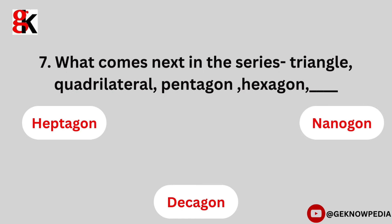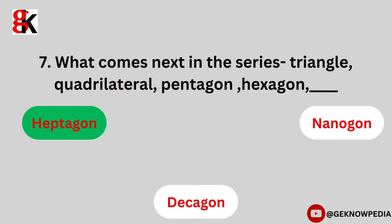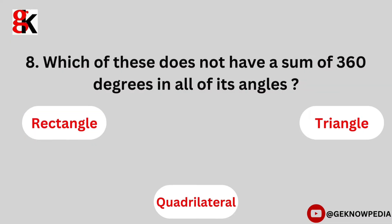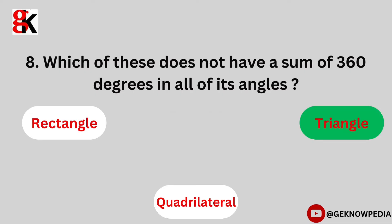The correct answer is square. The correct answer is heptagon. Eighth question. Which of these does not have a sum of 360 degrees in all of its angles? Rectangle, triangle, quadrilateral. The correct answer is triangle.